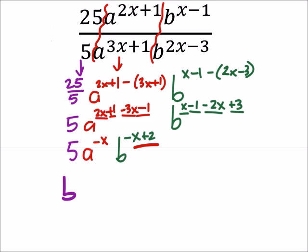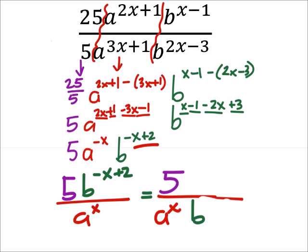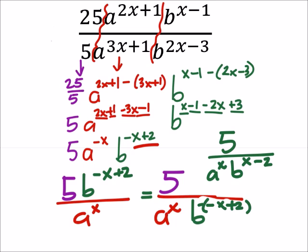It would be a little bit more difficult to split this one up. So maybe some people would prefer to see this as 5b to the negative x plus 2, and then over a positive exponent for a. So what happens is we need to take the negative of that, and that would make it 5 over a to the power of x times b to the power of positive x minus 2. Which is a little bit more work than I think they wanted, so I would say that should work.